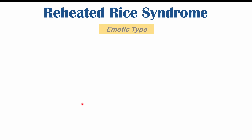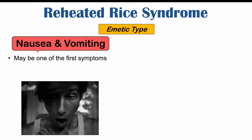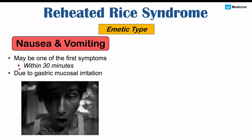The first type we're going to look at is the emetic type. As mentioned, it's going to be due to that preformed toxin, cerealide, and that's going to lead to issues in the upper gastrointestinal tract, involving the stomach. That's why we're going to see nausea and vomiting. Nausea and vomiting can be quite severe and have a sudden onset — it may be one of the first symptoms to occur. It can occur within 30 minutes, and this is due to cerealide toxin causing irritation of the gastric mucosa, the internal lining of the stomach.